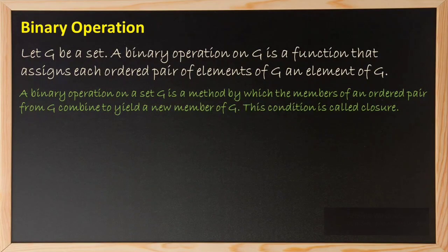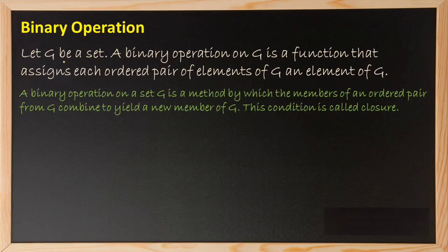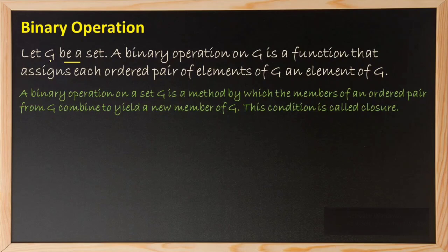Now let's not go by the formal definition — I will explain in my own words. G is any non-empty set. Whenever we see any set in group theory, it is understood to be a non-empty set. We take any two elements from that set, apply any operation — like ordinary addition, subtraction, or multiplication — and if the resultant also belongs to the same set from where we started, then we say that operation is a binary operation on G. It's that simple.